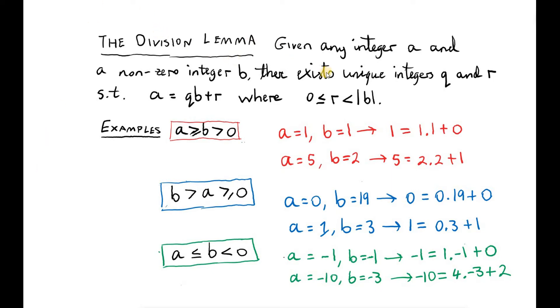The division lemma states that given any integer a and a non-zero integer b, there exist unique integers q and r such that a can be written as q times b plus r, where r is non-negative and less than the magnitude of b.